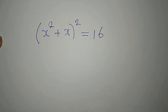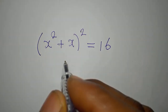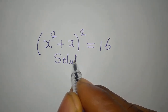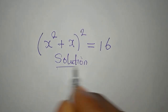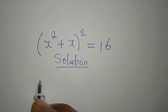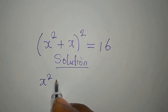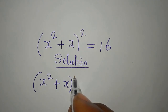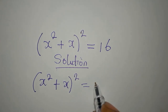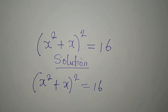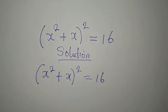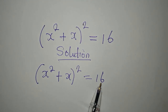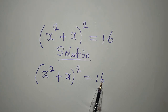Hello everyone. Let's provide the solution to this problem very quickly. We have x squared plus x to the power of 2 equals 16. And the first step to take is the square root, knowing that 16 is a perfect square.